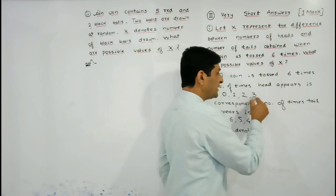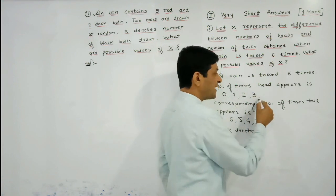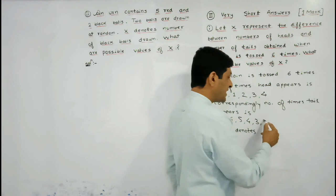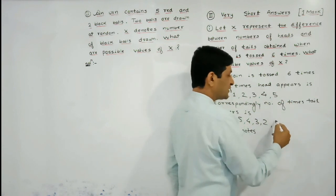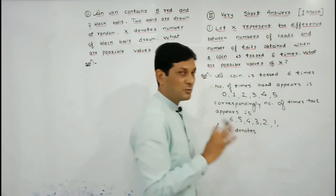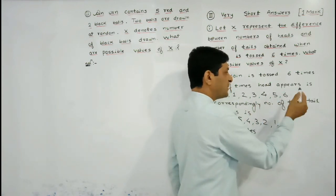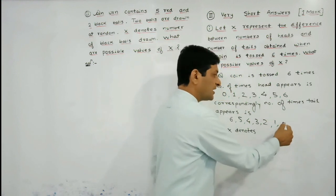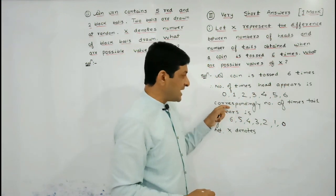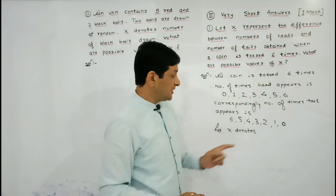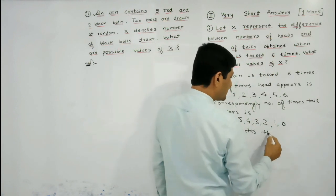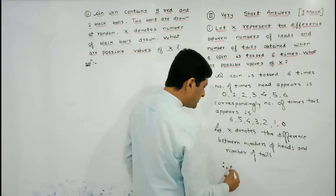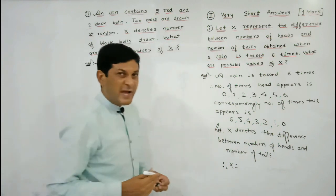If three times head appears, it means three times tail appears. If four times head appears and coin was tossed six times, then two times tail appeared. If five times head comes up, number of tails will be one. And it is also possible that all six times head comes up, meaning tails appeared zero times. Now X denotes the difference between number of heads and number of tails.